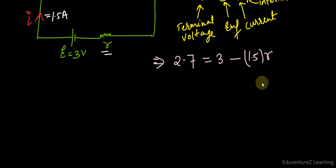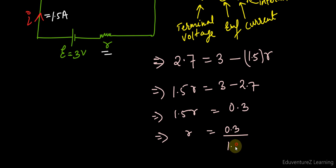And we are not known about the value of small r. So it can be written as 1.5 r equals to 3 minus 2.7, so 1.5 r is equals to 0.3, so r equal to 0.3 upon 1.5.